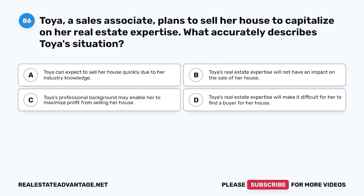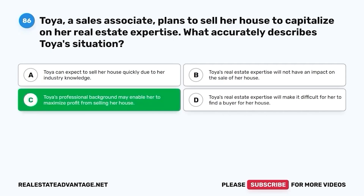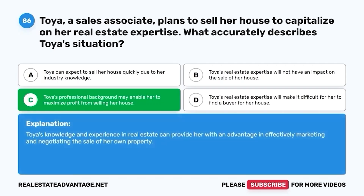Question 86. Toya, a sales associate, plans to sell her house to capitalize on her real estate expertise. What accurately describes Toya's situation? A. Toya can expect to sell her house quickly due to her industry knowledge. B. Toya's real estate expertise will not have an impact on the sale of her house. C. Toya's professional background may enable her to maximize profit from selling her house. D. Toya's real estate expertise will make it difficult for her to find a buyer. The correct answer is C. Toya's knowledge and experience in real estate can provide her with an advantage in effectively marketing and negotiating the sale of her own property.